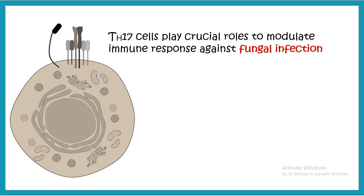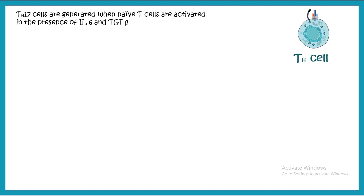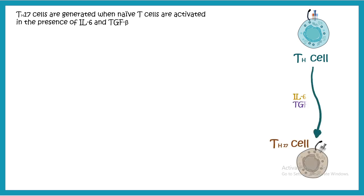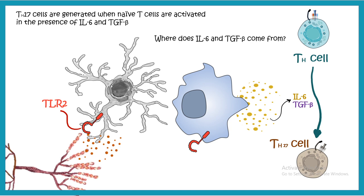A recently identified subpopulation, Th17 cells, also plays a very important role against fungal infection because they secrete IL-17, which is a key effector against fungal infections. Th17 cells are generated when naïve T cells are activated in the presence of IL-6 or TGF-beta — cytokines secreted by macrophages or dendritic cells. Once the dendritic cell or macrophage recognizes a fungal pathogen via TLR2, signaling leads to IL-6 and TGF-beta production, differentiating T helper cells into the Th17 population.